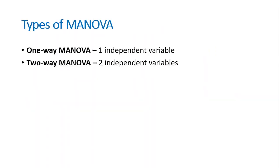There are two types of MANOVA. We have the one-way MANOVA, which has one independent variable — this is the one we will be demonstrating in this tutorial. Then we have the two-way MANOVA, where there are two independent variables.